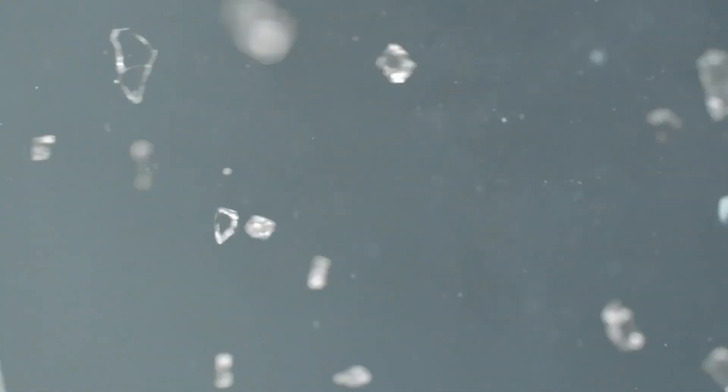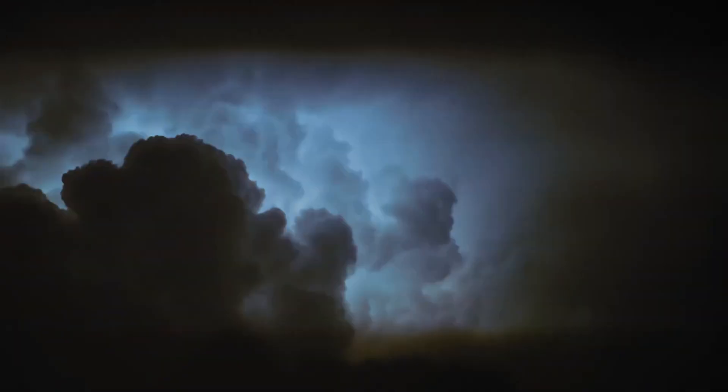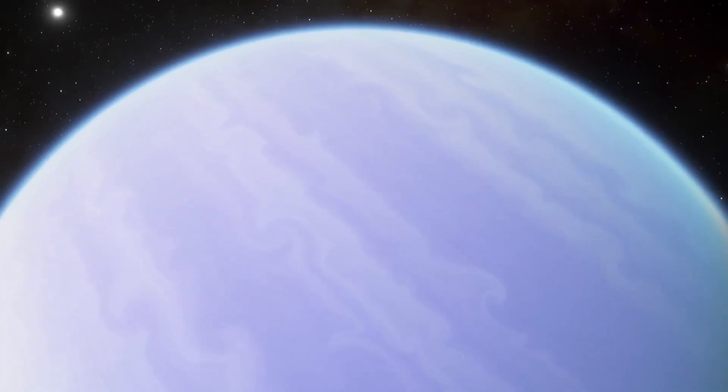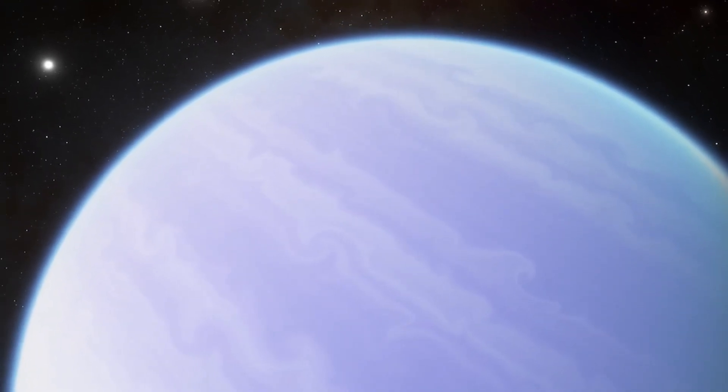Now here's where it gets really wild. When it rains on HD 189733b, it rains molten glass. Sideways. That is trillions of microscopic shards of glass, heated to 1,800 degrees, flying through the air, faster than a bullet. It's like the planet is caught in an eternal, hellish sandstorm.